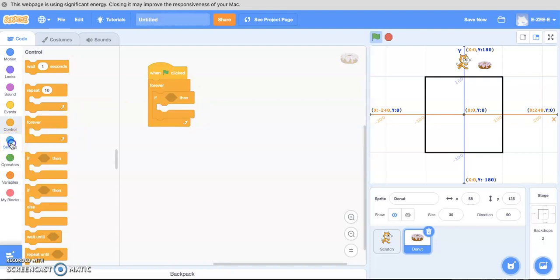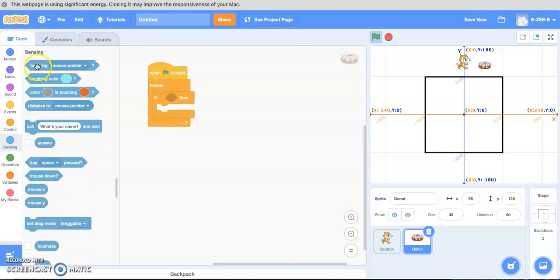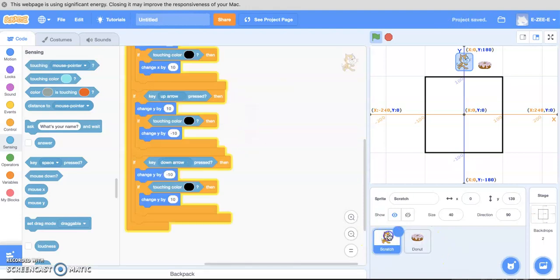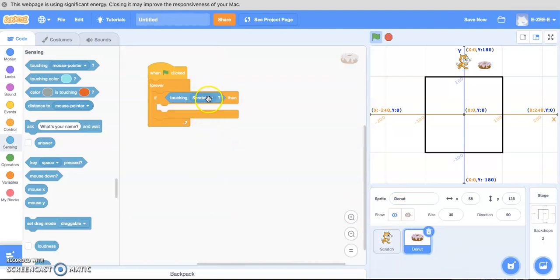We just add a sensing. So we're gonna go touching mouse pointer. But in this case what we want is touching Scratch. If you've named Scratch something different in here you just have to select that name. But in my case I've named him Scratch. You might have left it as sprite one.